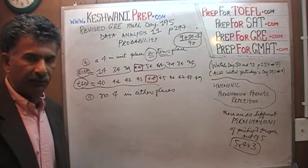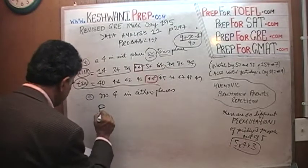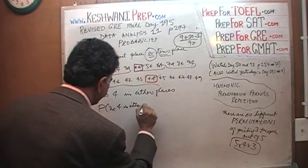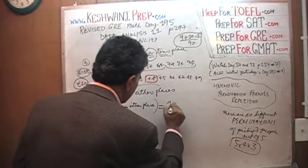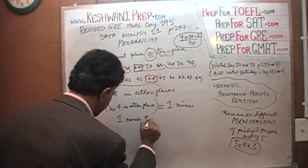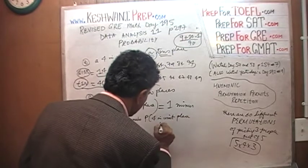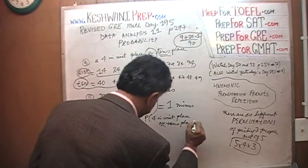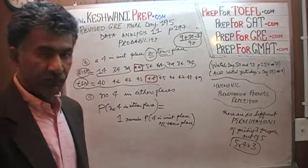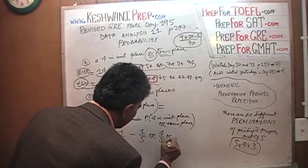Therefore, the odds of not having a four in either place — the probability of having no four in either place — equals one minus the odds of having a four in a unit or tens place. And we just found out that the odds of having a four in a unit place or tens place is twenty percent, therefore this is going to be eighty percent. It's simply one minus one-fifth, or four-fifths, or eighty percent.